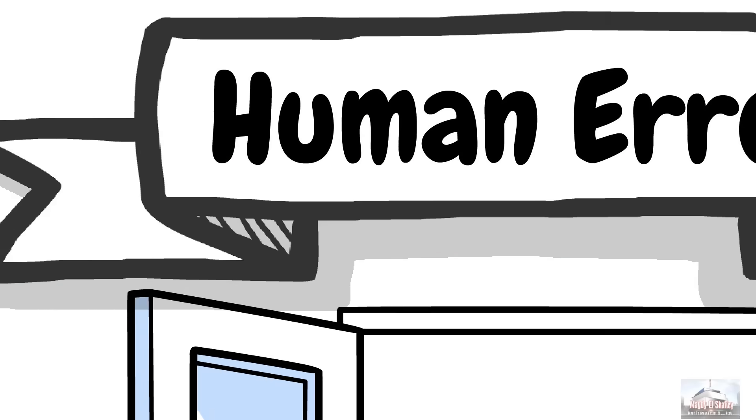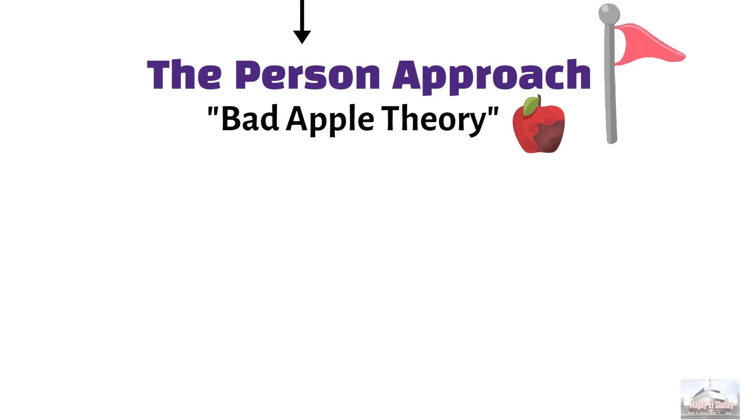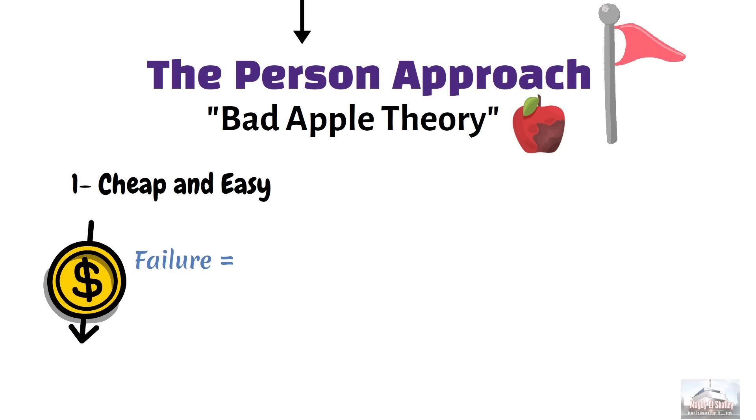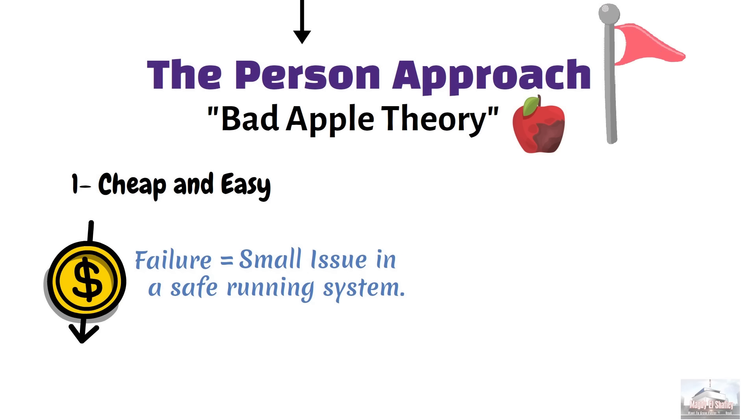But why is the first approach, the person approach, so popular? Well, because first, it's cheap and easy. It's simple. It's easy to understand. And it's cheap to implement. This theory paints failure as nothing more than a deviation. A small issue in a safe and smoothly running system.